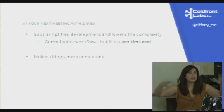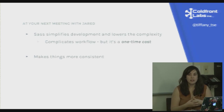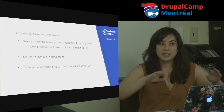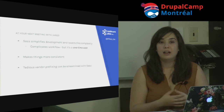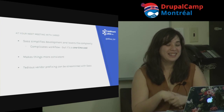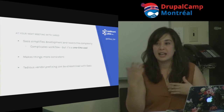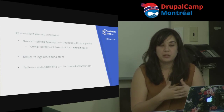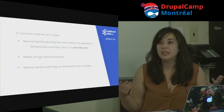Sass helps make things more consistent — if you boil every Sass concept down, it's really there for consistency. Variables make colors consistent throughout your site; mixins make repeated properties consistent. Tedious vendor prefixing can be streamlined with Sass — you can create mixins for vendor prefixes, or use external libraries like Compass, or additional task runners. Sass can help you with vendor prefixing right away without necessarily learning Grunt.